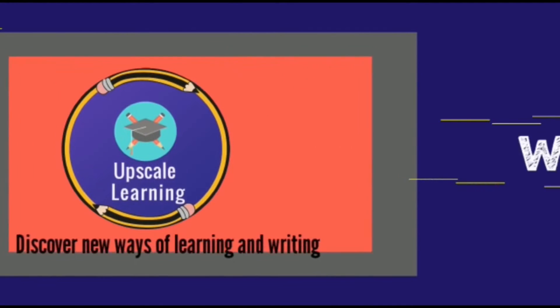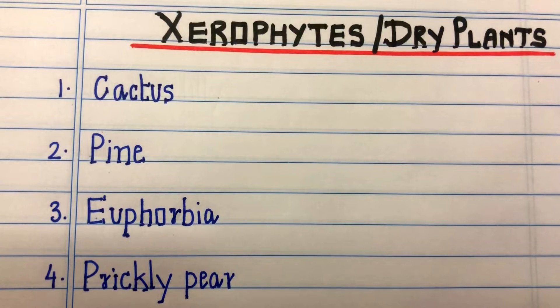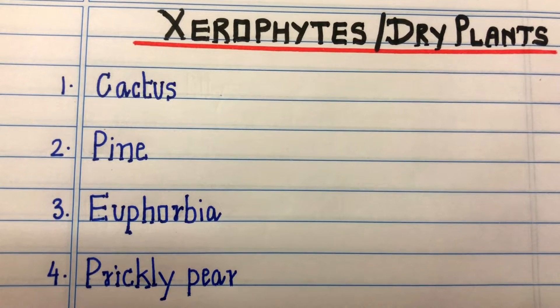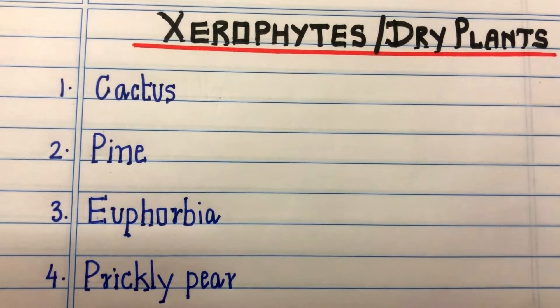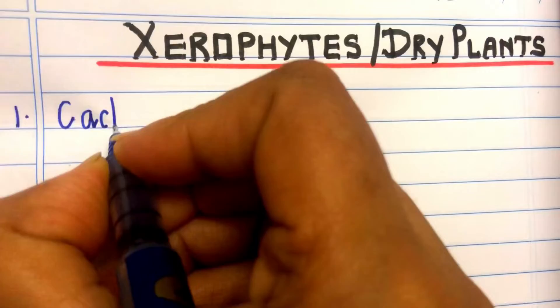Welcome to our channel Upscale Learning. Hello everyone. In this video, we will write names of xerophytes. They are also called dry plants. They mainly live in dry environments like deserts. First one: